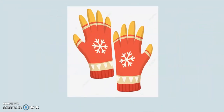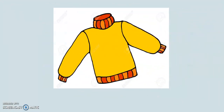What do you see? Gloves. What are they? They are gloves. What do you see? A jumper or sweater. What is it? It's a jumper or sweater. Again. What do you see? I see a jumper or sweater. What is it? It's a jumper or sweater.